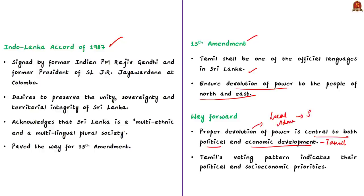This minority Tamil community suffered the most during the civil war that ended in 2009 and they are trying to come out of that trauma and rebuild their lives. This voting pattern by the Tamils indicates their political as well as socio-economic priorities, because the Tamil National Alliance promised political as well as economic devolution but nothing really came out of the previous five years of rule. Let us hope that the elected leaders at present will resolve the legitimate issues of Tamils to build a just and dignified future for them. From this news article, try to know about the 1987 Indo-Sri Lanka Accord and the 13th Amendment from exam perspective.